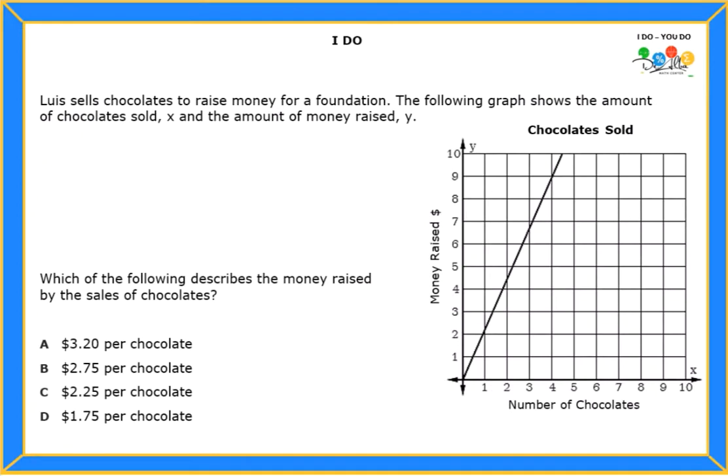Hello students, let's read the problem. It says Luis sells chocolates to raise money for a foundation. The following graph shows the amount of chocolate sold, X, and the amount of money raised, Y. Which of the following describes the money raised by the sales of chocolate? So let's see if we understand the question. If you notice in this problem there's no table, right? There's a graph.